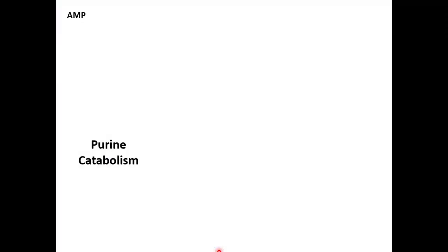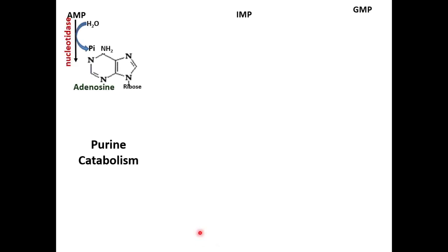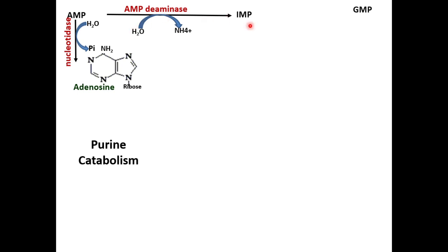The nucleotide monophosphates — AMP (adenosine monophosphate), IMP (inosine monophosphate), and guanosine monophosphate — are converted to their respective nucleosides by the action of nucleotidase. Starting with AMP: nucleotidase removes a phosphate to form adenosine. AMP can also form IMP via AMP-deaminase, which removes an amino group and releases an ammonium ion.